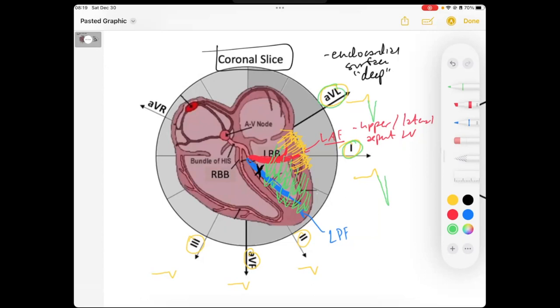And on the inferior leads that these are pointing towards, we're going to get taller R waves. And so that is how we get the morphology of a left posterior fascicular block.